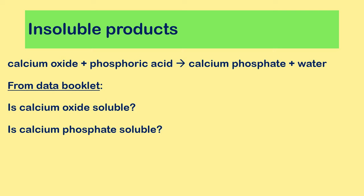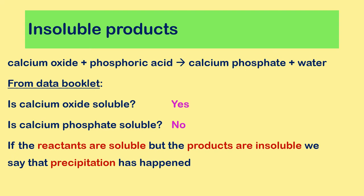The first question is: is calcium oxide soluble? Looking at page 8 of the data booklet, we find calcium on the left-hand side, then go across to the oxide column — there is an S in that box, meaning it is soluble. Then for calcium phosphate, starting at calcium and going across to the phosphate column, there is an I, meaning it is insoluble. If reactants are soluble but products are insoluble, we call that a precipitation reaction and the product a precipitate.